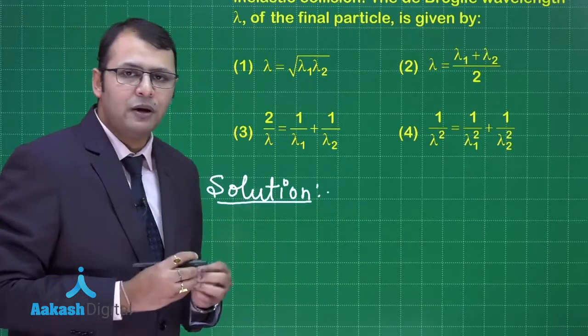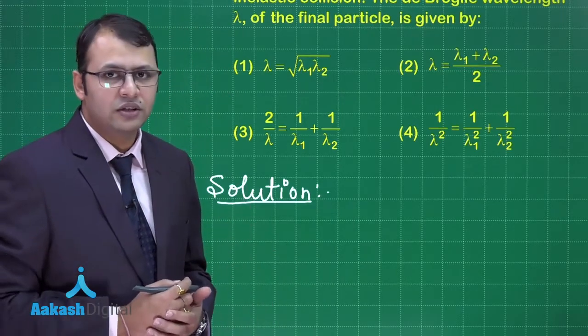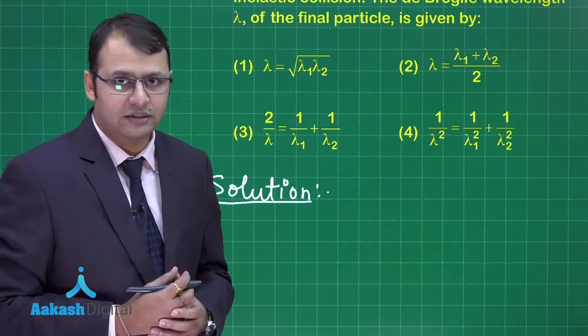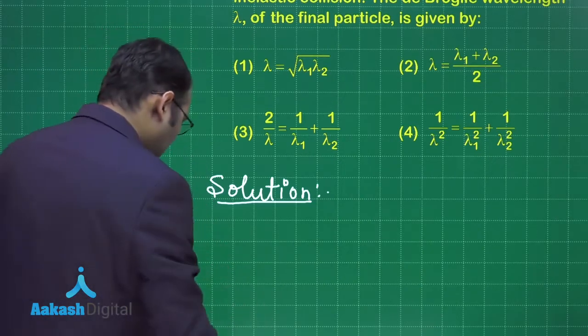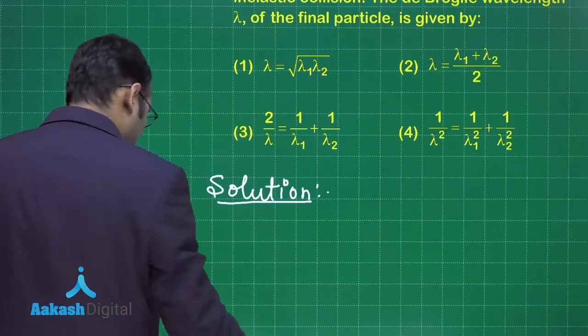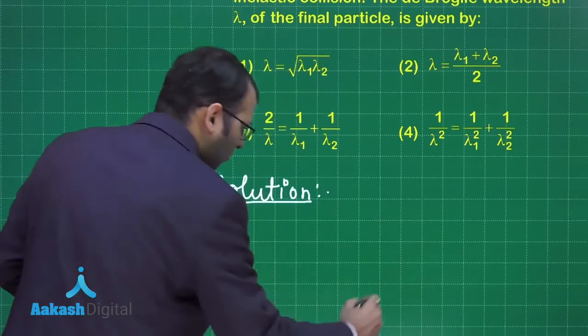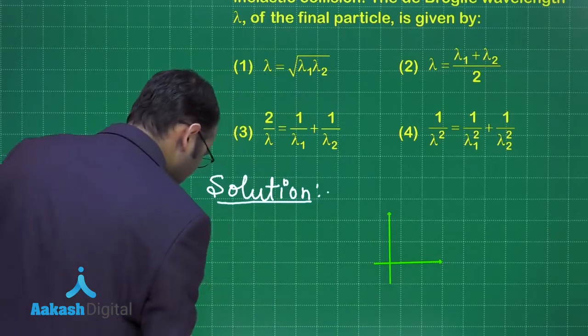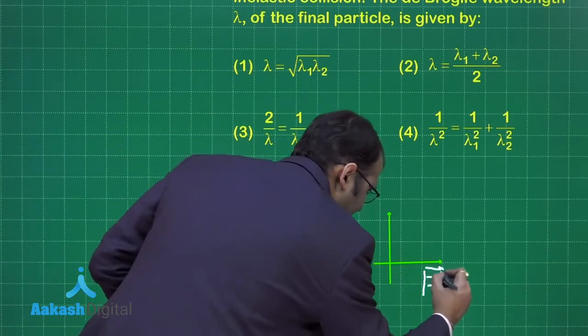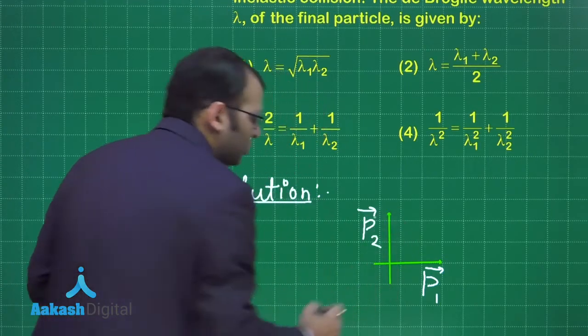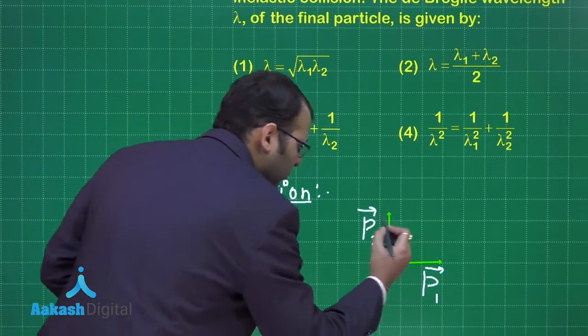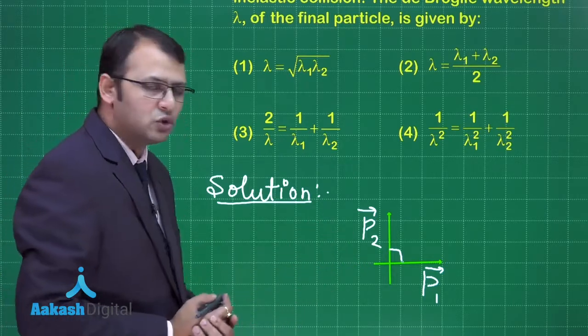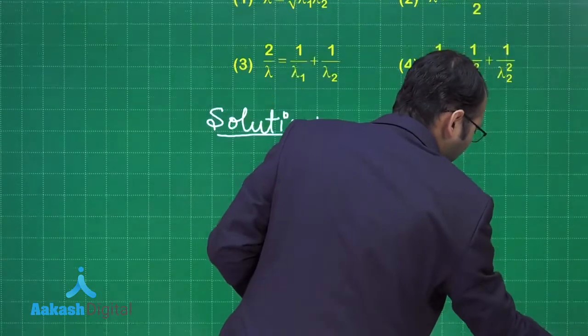For perfectly inelastic collision, the momentum sum will always remain constant. If the two particles are moving, let me mark it for you. Momentum P1 would be along this line, momentum P2 will be along this line. So let's take this as P1 and this being P2. They are perpendicular to each other.